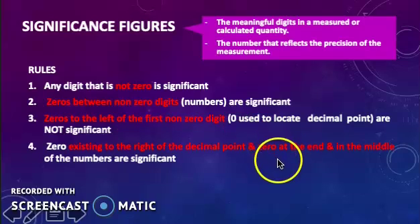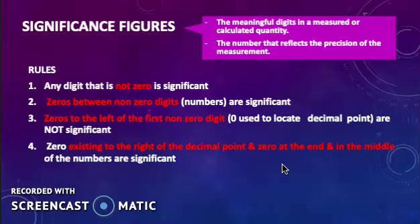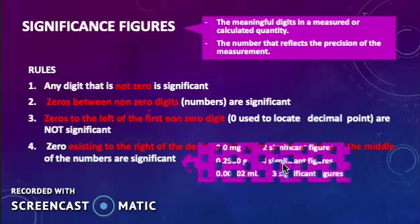if a number is greater than 1, then all zeros written to the right of the decimal point, and 0 at the end, and in the middle of the numbers, are significant. Like the following examples.